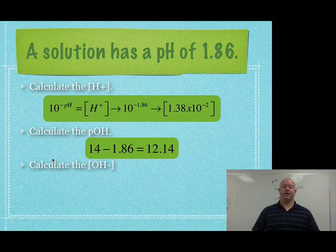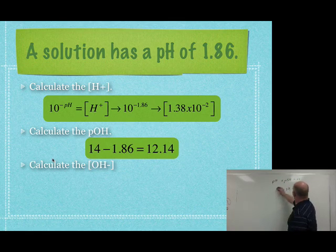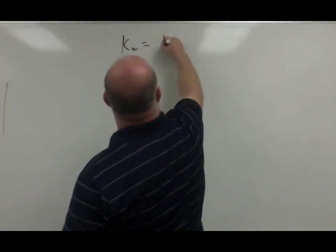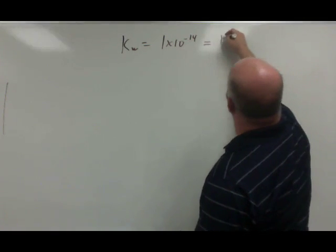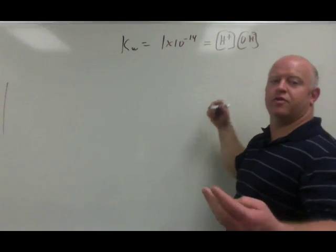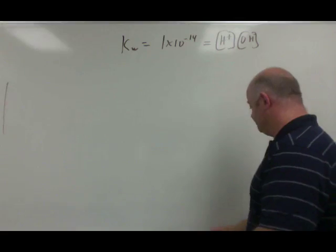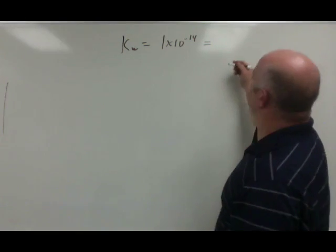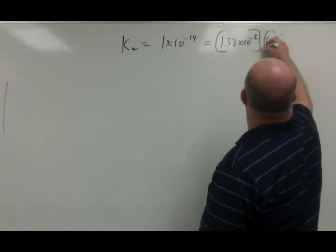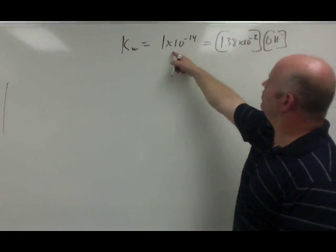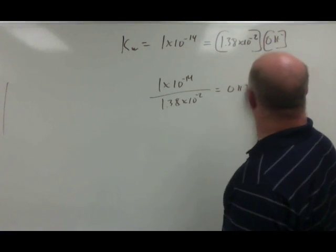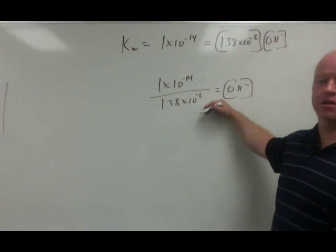Now the last part of this practice problem is calculating the OH minus concentration. So again, we have two ways of doing that. And I'm going to show you both. The first way is we know that KW is equal to 1 times 10 to the negative 14. And we know that is equal to the hydrogen ions times the hydroxide ions. So from the first part of this problem, we know the hydrogen ions. So we can just insert that here. And we can just solve for hydroxide ions here. So we can take the 1.1 times 10 to the negative 14 divided by 1.38 times 10 to the negative 2. And that will give us our hydroxide ion concentration. So that's one way of doing it.